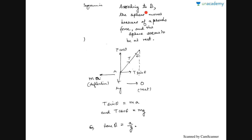Observer B is inside the non-inertial frame of reference. From B's perspective, the pendulum appears to be at rest but deflected — there seems to be no net force, yet there is a deflection towards the left, opposite the acceleration a. This deflection is actually due to the pseudo force. Similarly, the horizontal component of tension balances the pseudo force ma (towards the left), and the vertical component balances mg, giving the same result: tan θ = a/g.